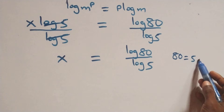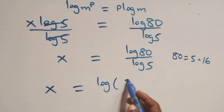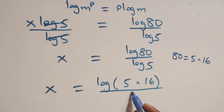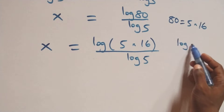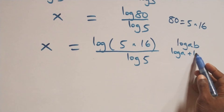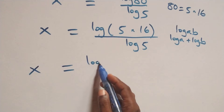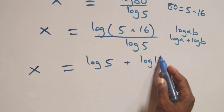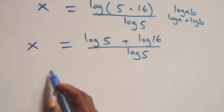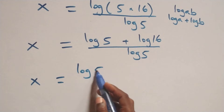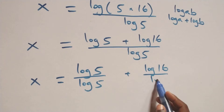Then also from here, we can write 80 as 5 times 16. So what we have becomes x equals to log of 5 times 16 over log 5. This follows the law of logarithms: log of a times b is the same thing as log a plus log b. So here we have x equals to log 5 over log 5 plus log 16 over log 5.